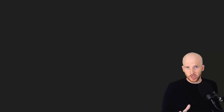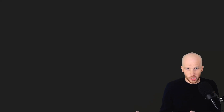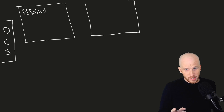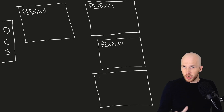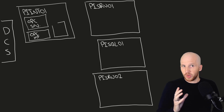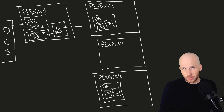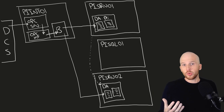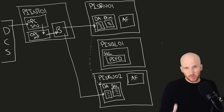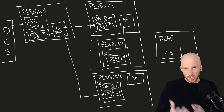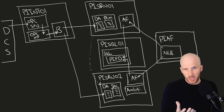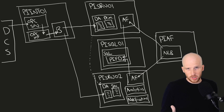Almost every service we've mentioned in this class can be moved off to another machine, and many can be made into redundant services. With this in mind, let's go through each component and under what conditions we'd expand our system and add more machines. We're not going to do all of this in class, but it's good to go through what our decision process would be if we wanted to make our system larger.